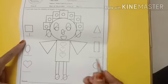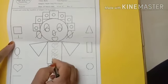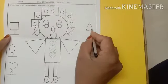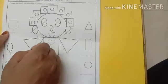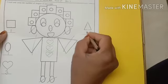Now heart. Come on, count with me. One, two, three. Three heart shape. What about triangle? Come on, let us count. One, two. Two triangle.